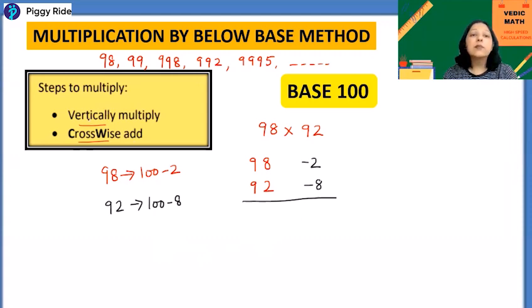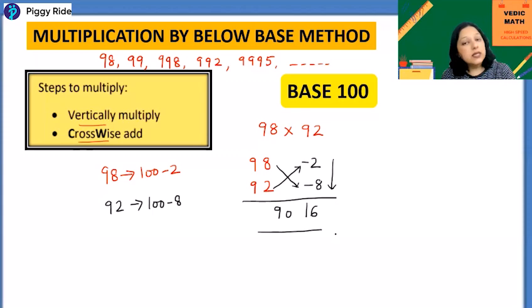So minus 2, minus 8. Now according to our steps, multiply vertically. So vertically, multiplication of 8 times 2 is 16, so it will be 16 here. And now crosswise addition. Crosswise you can add 98 and minus 8, or you can add 92 and minus 2. This minus sign is very important because 98 plus minus 8 will be 90. So in this case we are actually subtracting. Either you subtract 98 and 8 or you subtract 2 from 92, answer will be same. So our answer is 9016, and the base is 100, so we require 2 digits here. So the answer is 9016. Let's take some other example to get the concept.